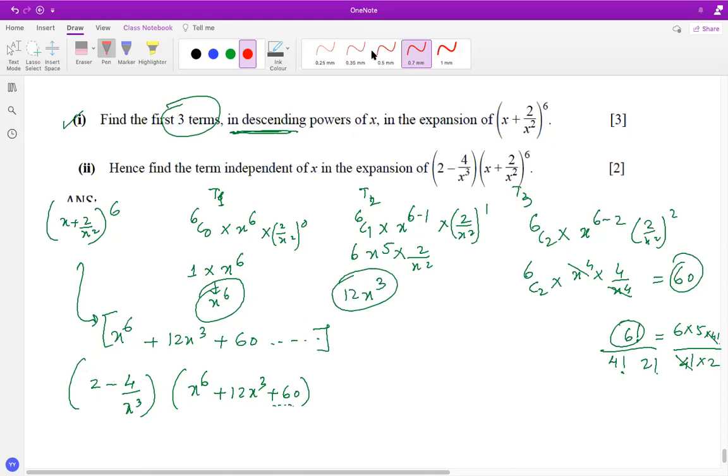I need to choose the right combinations. I get a constant term when I multiply minus 4 by x cubed with 12x cubed, which cancels out and gives negative 48. Plus when I multiply 2 with 60, I get 120. If you add 120 and negative 48, that's your term independent of x.